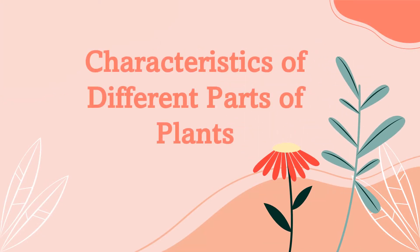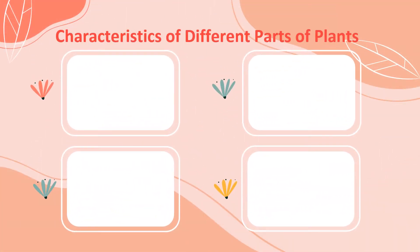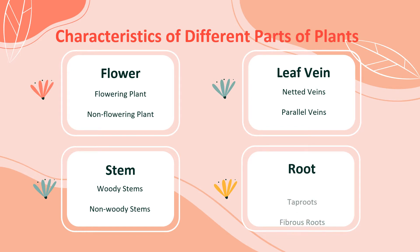Next, let us learn about the characteristics of different parts of plants. There are four characteristics: number one, flower — there are flowering plants and non-flowering plants; number two, leaf veins — there are netted veins and parallel veins; number three, stem — there are woody stems and non-woody stems; and number four, root — there are tap roots and fibrous roots.